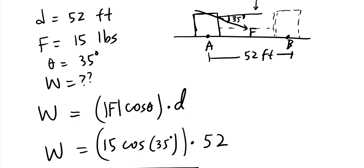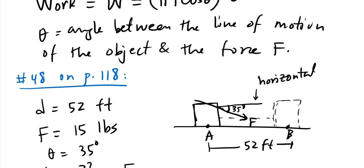That's what this section is about — the geometric interpretation of vectors. The applied force is the vector force, and this horizontal component is F_x, the force in the horizontal direction. We'll continue discussing vectors in the next section, which is 7.5.